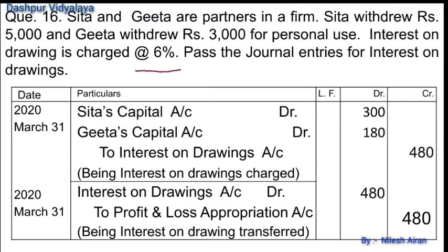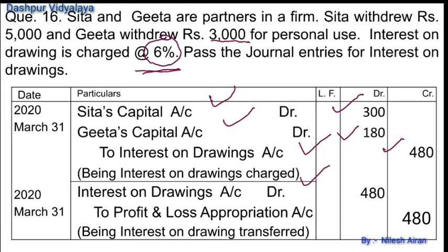The drawings and rate are given, but the rate is given without 'per annum'. When 'per annum' is not mentioned, interest is charged for the whole year. Journal entry: Sita's capital account debit, Gita's capital account debit to interest on drawings account. Then interest on drawings account debit to profit and loss appropriation account. 6% of rupees 5000 = rupees 300; 6% of rupees 3000 = rupees 180. Total interest for the whole year = rupees 480.